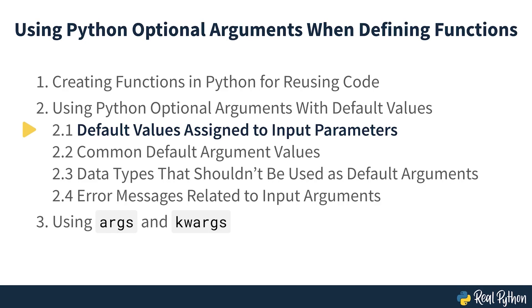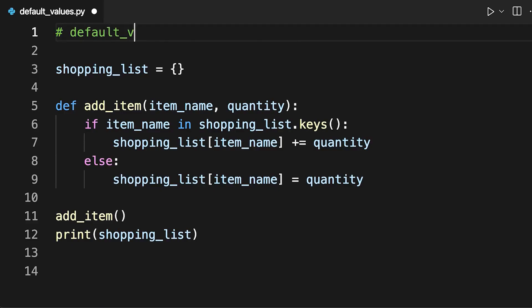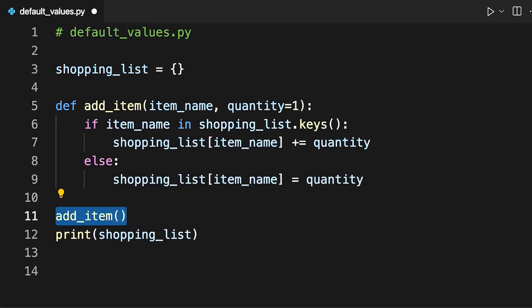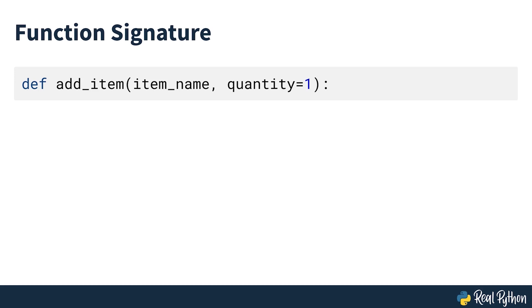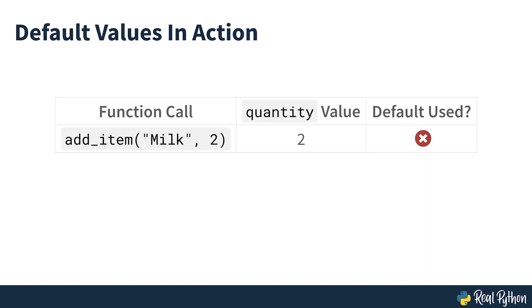Default values assigned to input parameters. You can modify the function addItem so that the parameter quantity has a default value. In the function signature, you've added the default value 1 to the parameter quantity. But this doesn't mean that the value of quantity will always be 1. If you pass an argument corresponding to quantity when you call the function, then that argument will be used as the value for the parameter. However, if you don't pass any argument, then the default value will be used — 1 in this case.